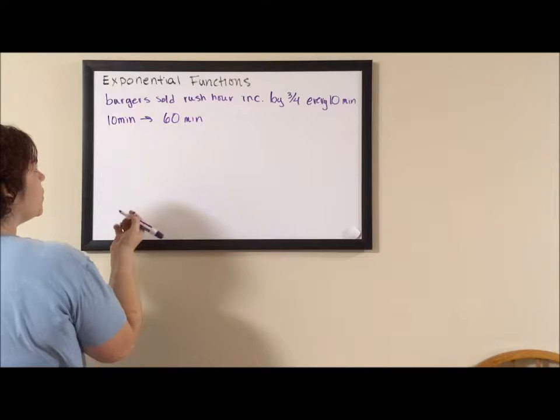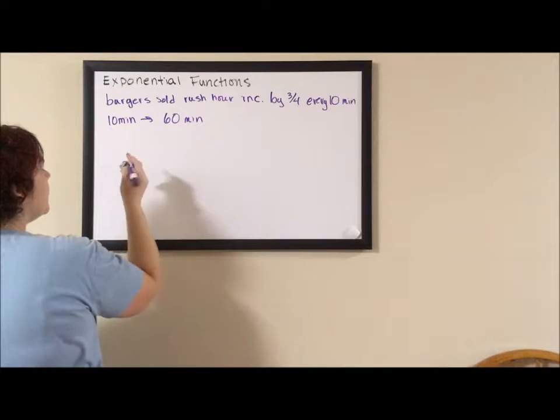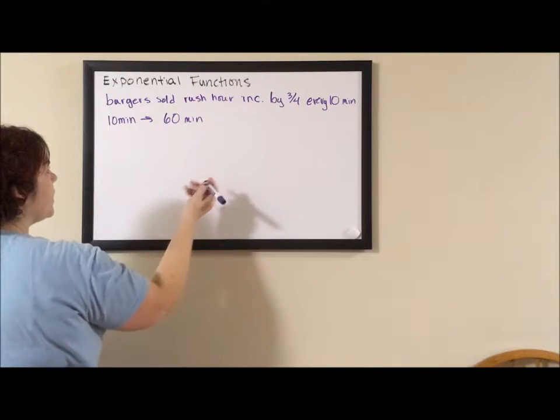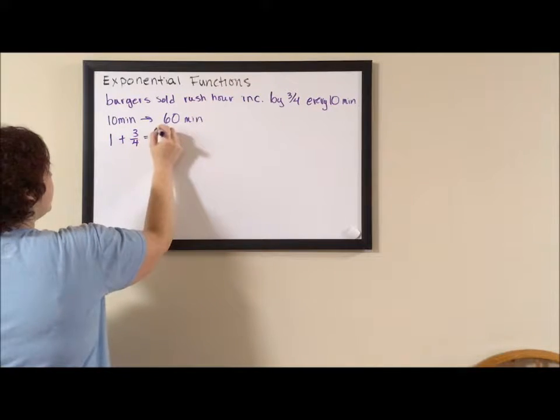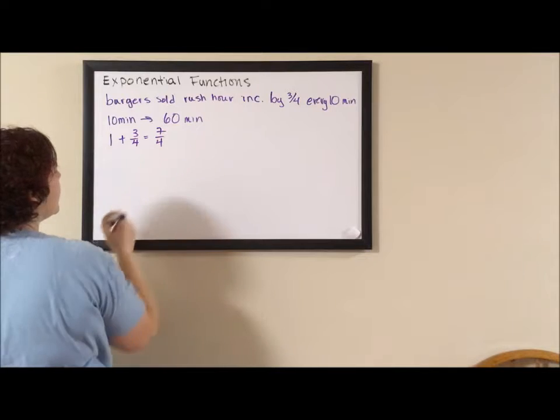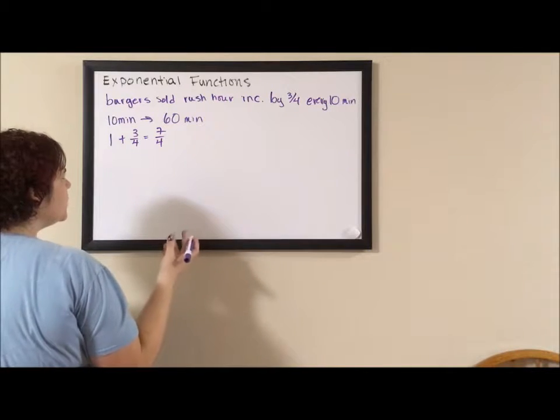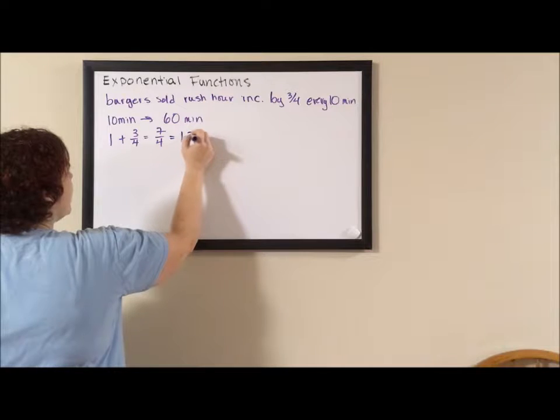So if you think about the fact that it's increasing by three-fourths, we need to do one plus three-fourths which is seven-fourths. But because everything is going to end up being decimals eventually, you could also take this down to 1.75.